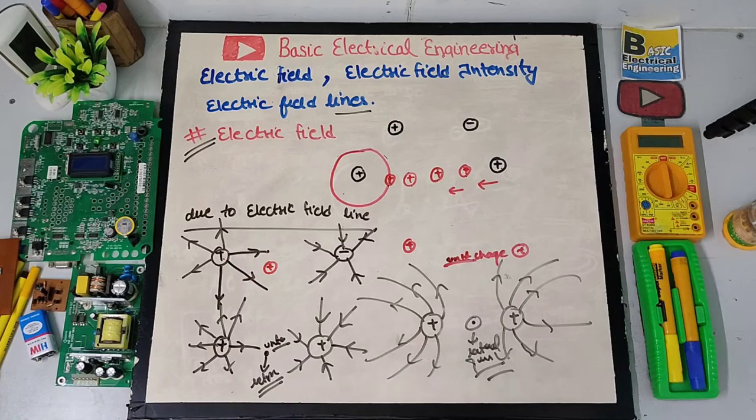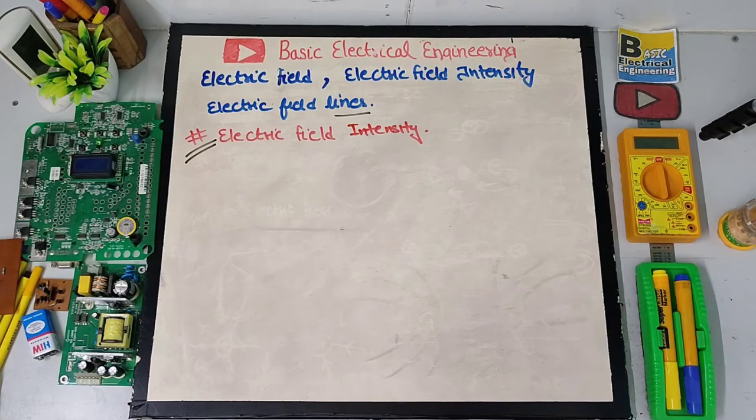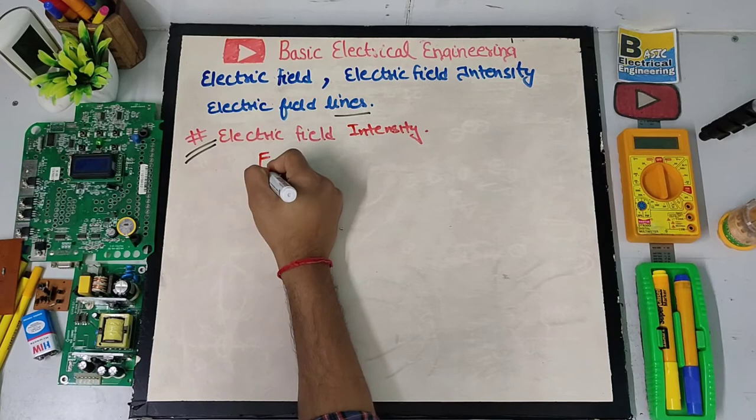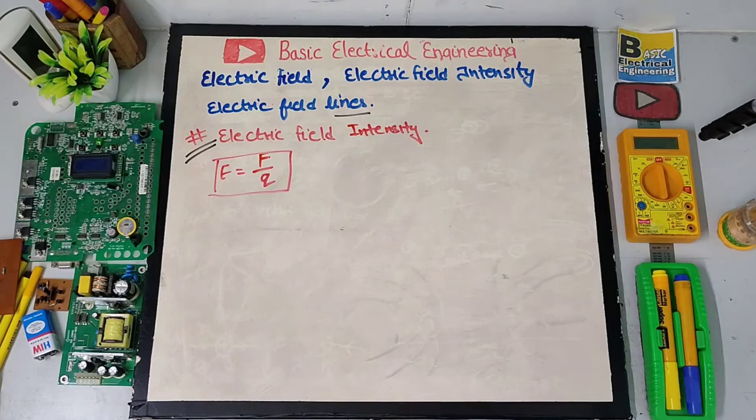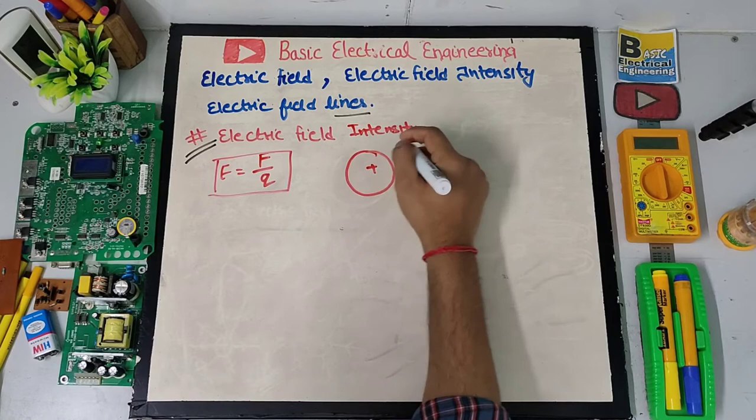We've seen the concepts of electric field and electric field lines. Now let's discuss electric field intensity. Electric field intensity is defined as the force per unit charge. So the force acting per unit charge is known as electric field intensity.